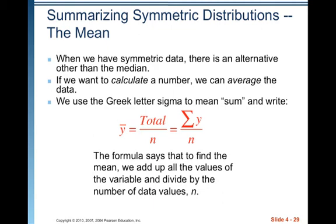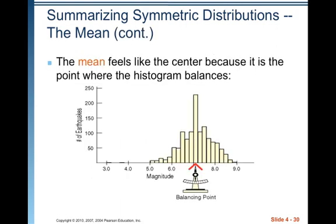Another way to measure the middle is the mean, which really should be used only with symmetric distributions. We use the Greek letter sigma to mean sum and write Y-bar or X-bar for the average — your book uses Y-bar, your calculator uses X-bar. The mean equals the total of all observations divided by the number of observations, just like figuring your average test grade. The mean feels like the center because it is the point where the histogram balances.